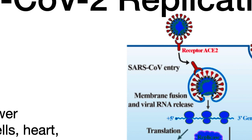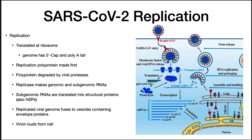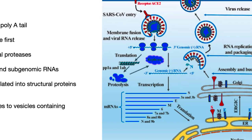Once SARS-CoV-2 binds, the virus is taken into the cell by the endocytotic pathway. Entry of the virus into the cytoplasm is dependent upon acidification of the endosome, which involves spike protein cleavage and a conformational change. A membrane fusion between the viral envelope and the endosome occurs, and the nucleocapsid then enters the cytoplasm. After entry of the single-stranded RNA into the cytoplasm it heads to the ribosome. The viral genome has a 5-prime cap and a poly-A tail, so it looks like a messenger RNA.